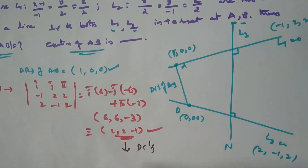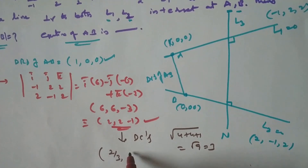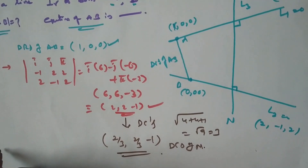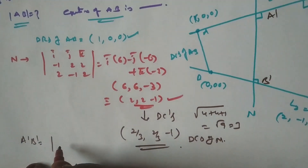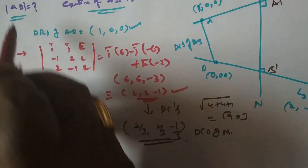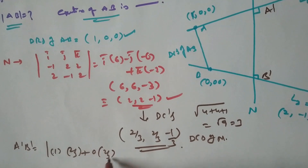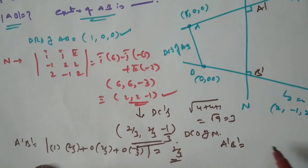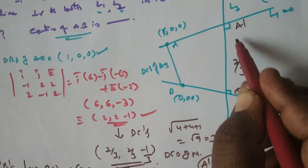Now compute the shortest distance A dash B dash. It equals the modulus of direction ratios of AB dot direction cosines of the normal: |1·(2/3) + 0·(2/3) + 0·(-1/3)| = 2/3. So A dash B dash equals 2/3. The shortest distance between the two skew lines is 2/3 units.